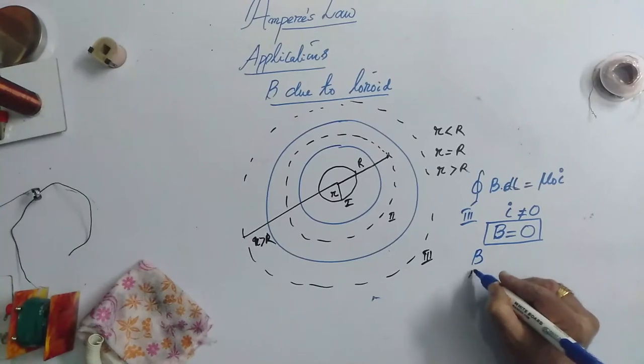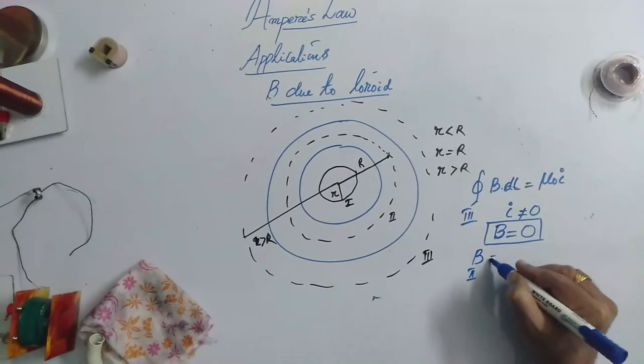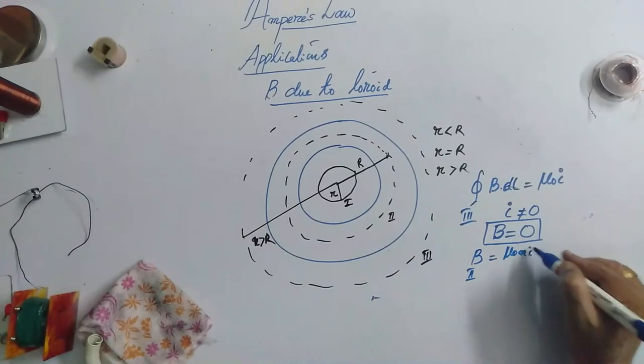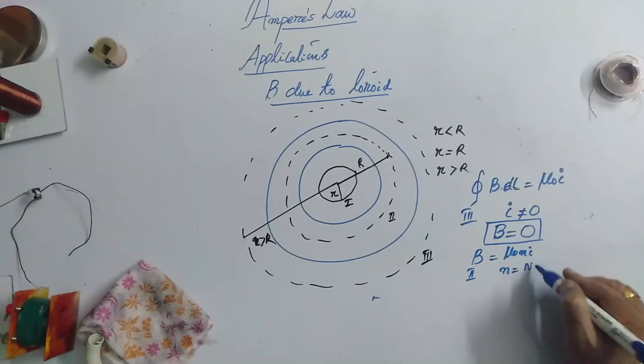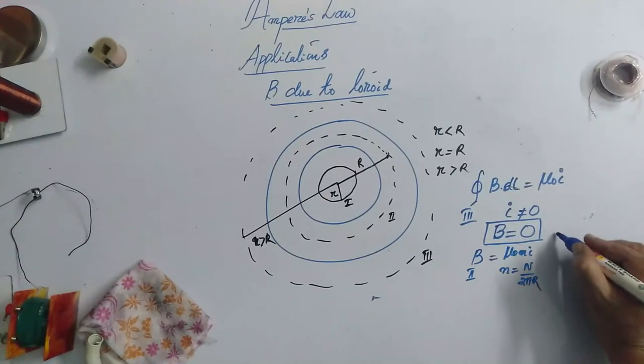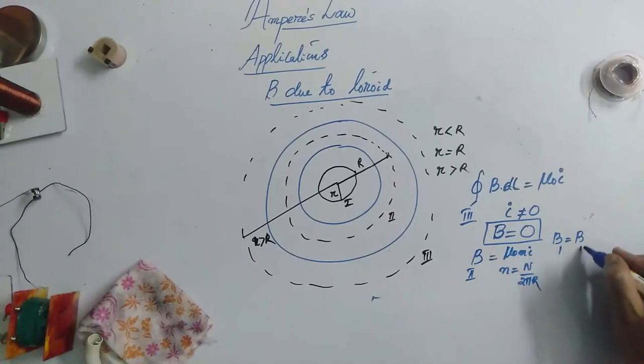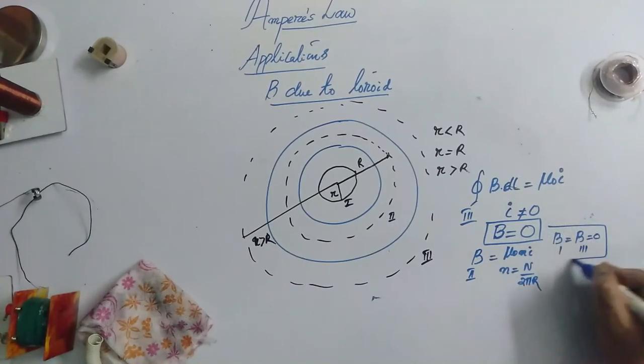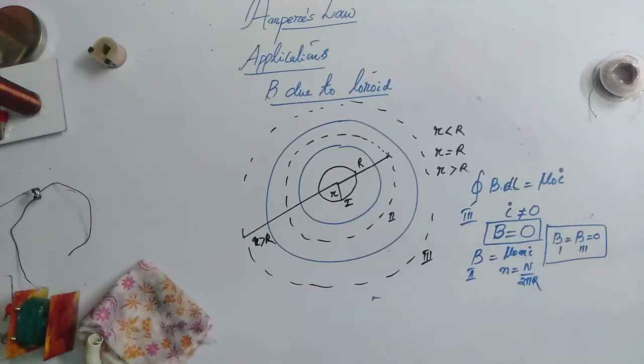So, B exists only in the second loop which is equal to mu naught times of n i where small n represents n by 2 pi r. Whereas, B in first loop and B in third loop is 0. So, this is the derivation for solenoid.